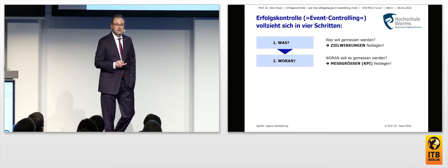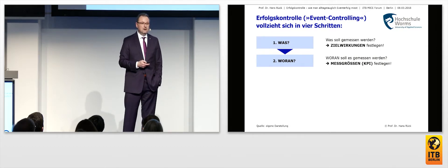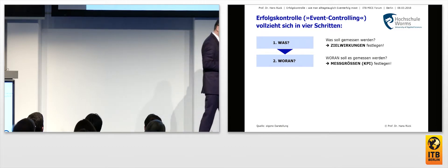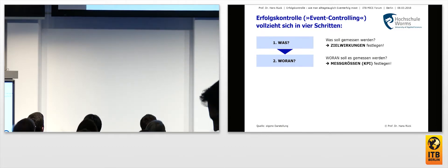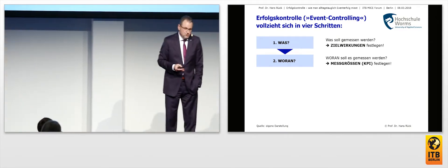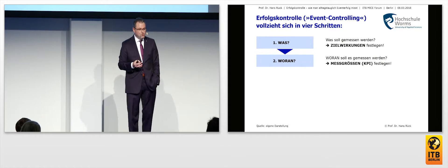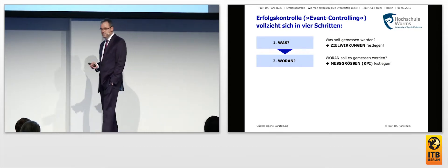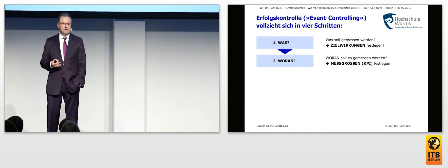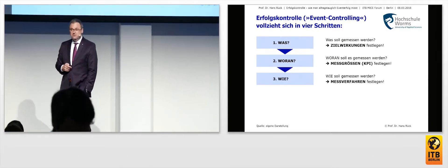Secondly, which parameters should be used to measure this? It doesn't suffice just to say that you have a certain target impact — you need certain indicators. For example, imagine you've gone along to an event and you're trying to sell products there. As your parameter, you could take the number of units sold and the turnover, or indeed both. Just saying 'product sales' is too imprecise. You have to say exactly what you mean. And if you're looking at measuring your image, it gets a lot more complicated.